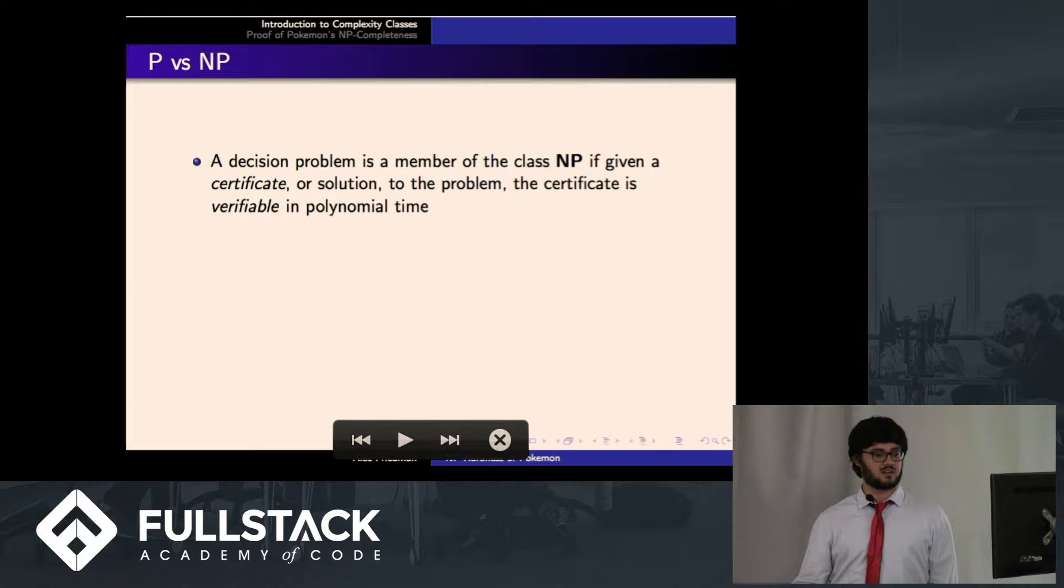So first I'm going to talk about P versus NP, and what is P and what is NP. A decision problem is a member of the class NP if given a certificate of that problem or a solution to the problem, we can verify that that certificate is accurate in polynomial time. And when I say polynomial time, that means polynomial time based on the size of the problem. So if we were to have a graph with N nodes, we would be able to verify the certificate for some problem in polynomial time of N.